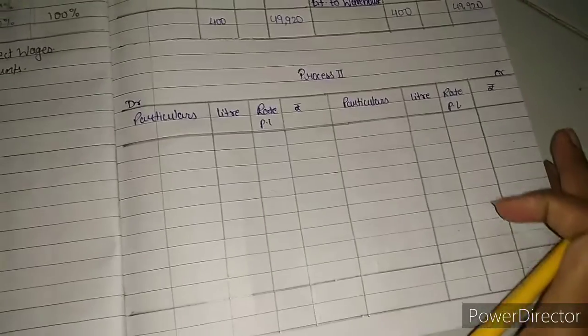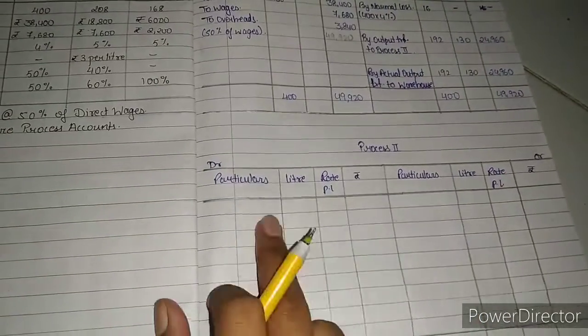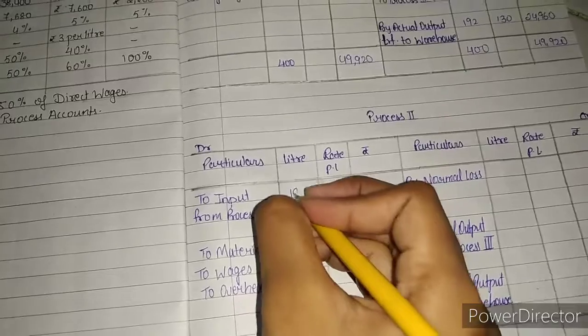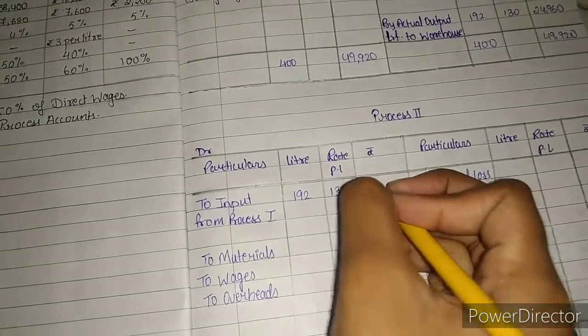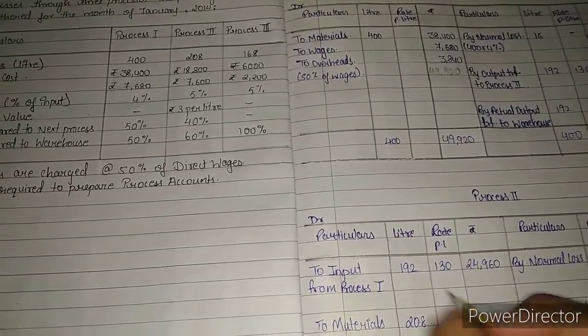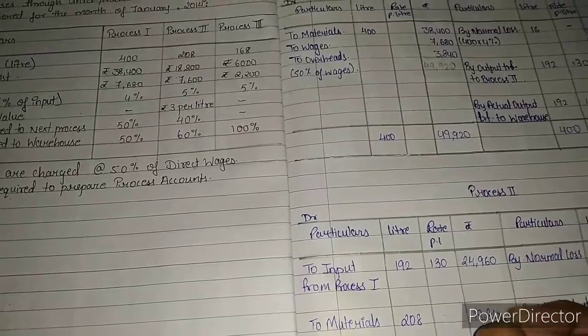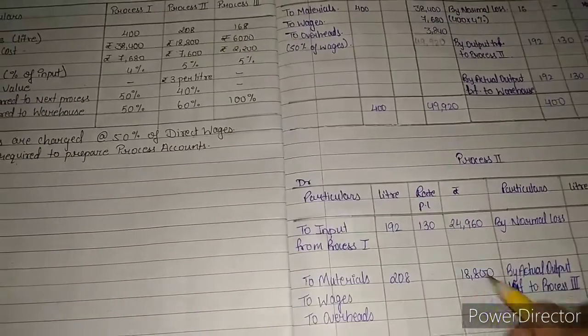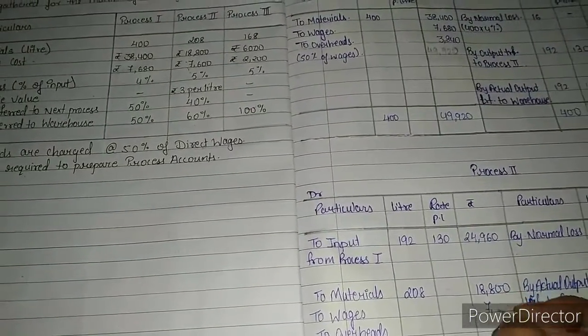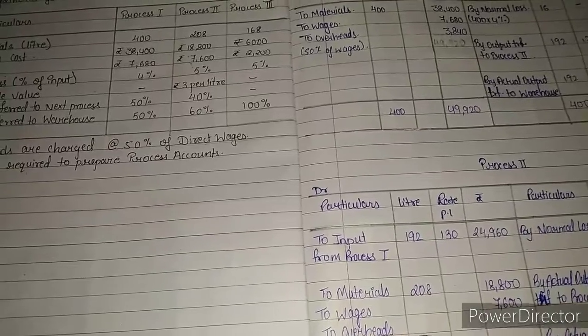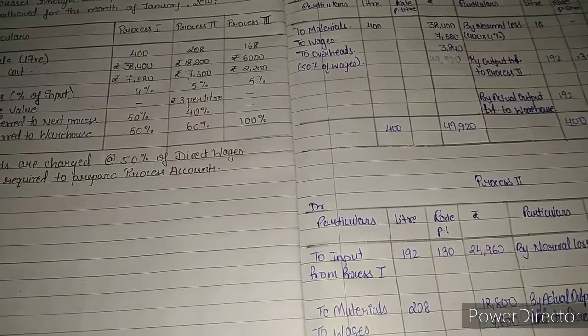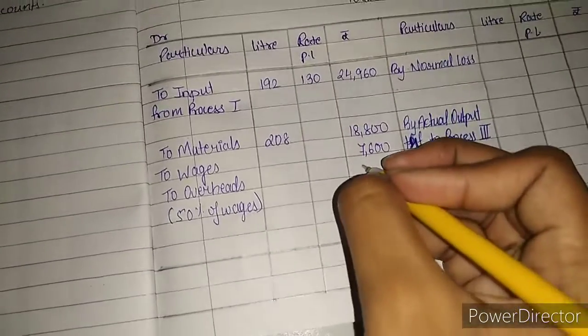Moving to Process 2. Input from Process 1 is 192 liters at 130, totaling 24,960. Materials added are 208 units costing 18,800. Wages are 7,600, and 50% of wages for overheads equals 3,800.